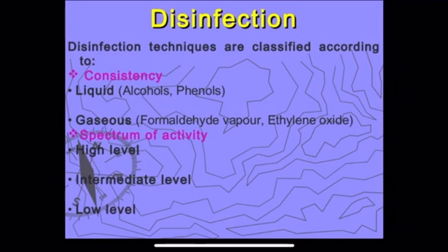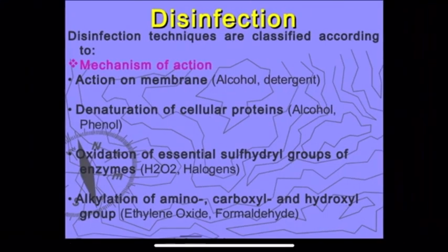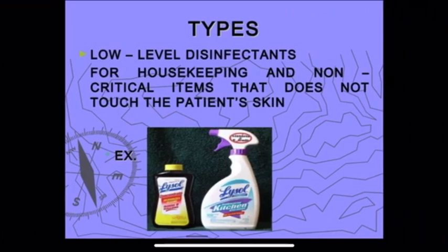Disinfection techniques are classified according to consistency and spectrum of activity — how fast they can act — at high level, intermediate level, or low level. The mechanism of action includes action on the membrane, denaturation of cellular proteins, and effects dependent on oxygen and alkylation.